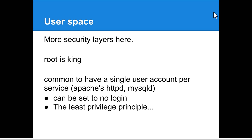In user space, there are more security levels with the Unix permissions model. Essentially what you need to know is root is king. It's common to have a single user account per service — if you have Apache's Tomcat or HTTPD running, it will usually run under its own account when set up properly. Every user account can be set to have no login, pointing to some program like /bin/false, which just returns false and won't run anything.